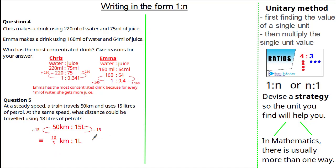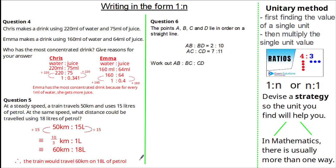Now, to find 18 litres, I simply multiply by 18, giving me an equivalent ratio of 60 kilometres to 18 litres. Therefore, the train would travel 60 kilometres on 18 litres of petrol. Now let's look at a more complicated question.